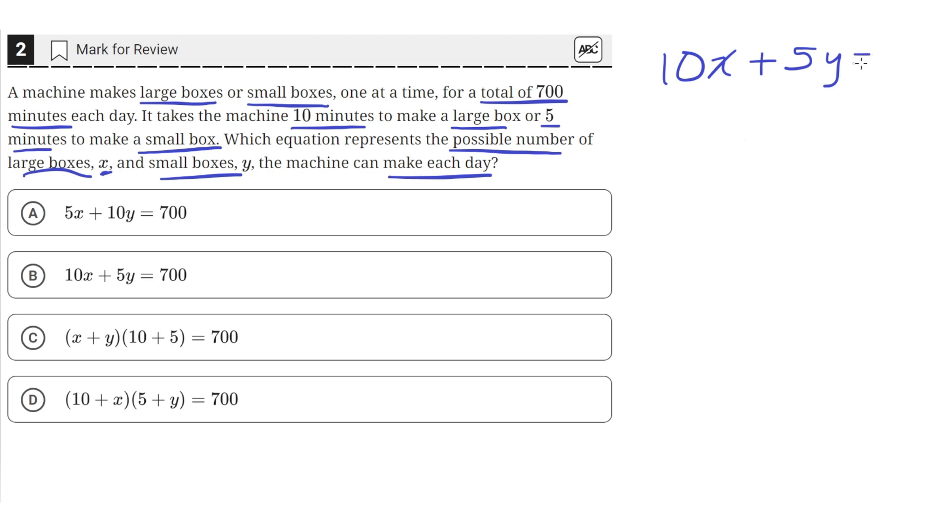Which, the problem statement tells us, is equal to 700 minutes, since it spends a total of 700 minutes making boxes. So this equation represents this situation, where x and y are the amount of boxes that the machine makes. And that is answer choice B.